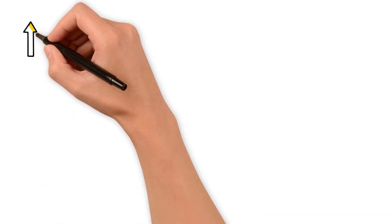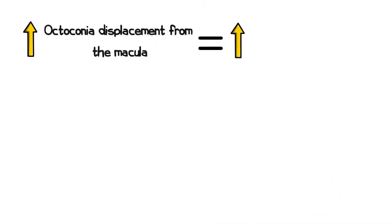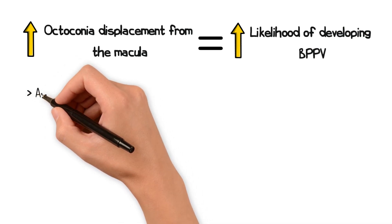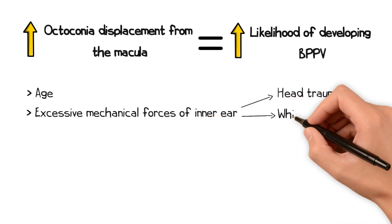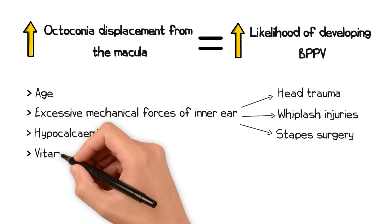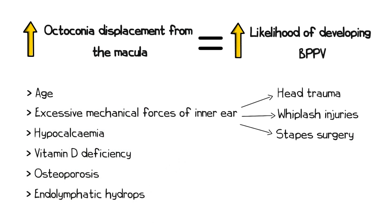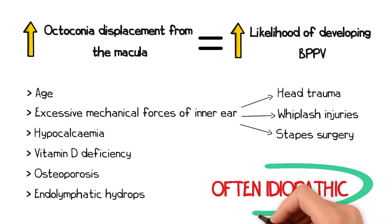Factors that increase the likelihood of otoconea displacing from the macula increase the likelihood of developing BPPV. These include age, due to degeneration of the macula; excessive mechanical forces of the inner ear, such as following head trauma or whiplash injuries, or following stapes surgery; hypocalcemia, vitamin D deficiency, and osteoporosis. Endolymphatic hydrops can also increase the risk. Often, however, BPPV can be idiopathic, with no notable risk factors.